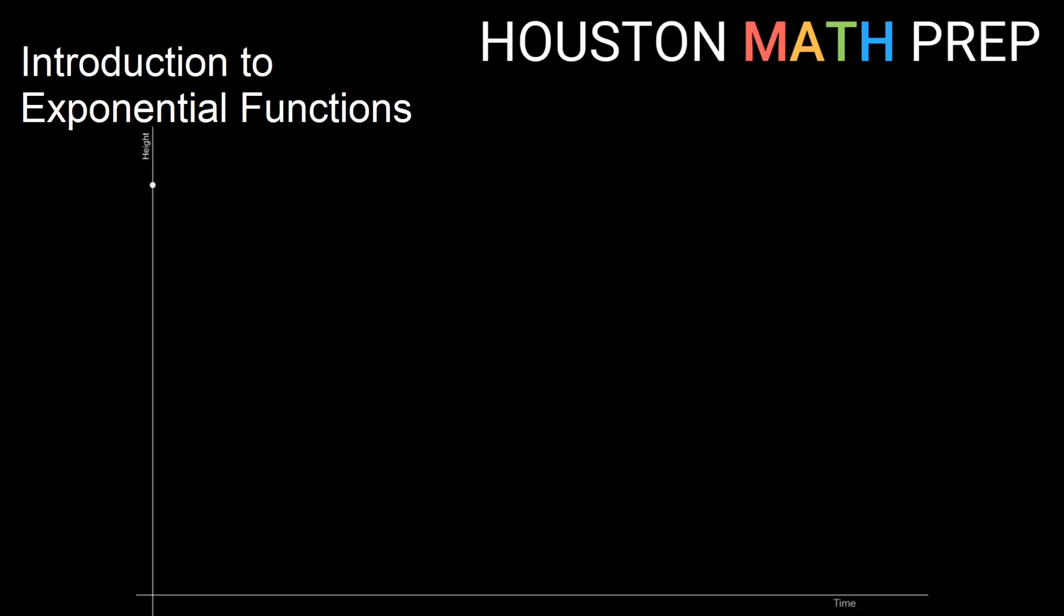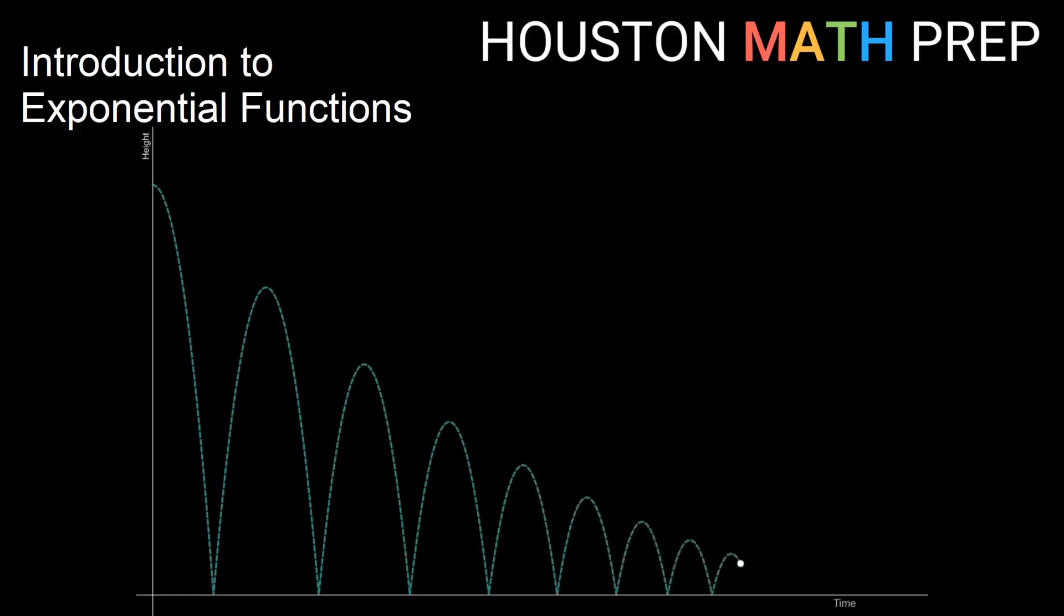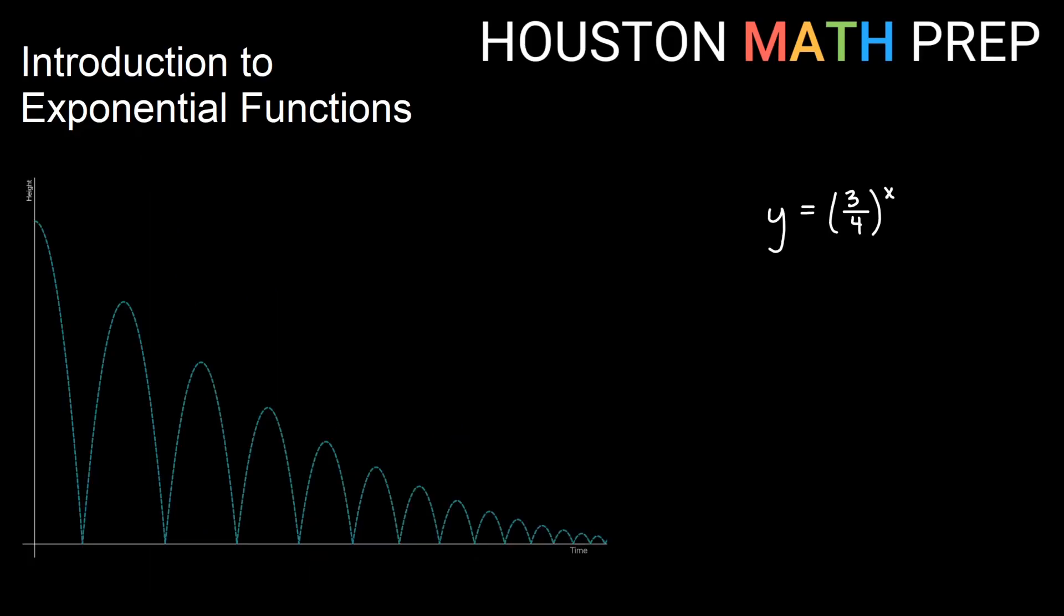Welcome back everyone. Houston Math Prep here. Let's say I'm holding a ball at some height in the air and I let go of the ball, and each bounce that it takes will bounce up to a height that is three-fourths as high as the bounce before it. So obviously each bounce is getting lower and lower, and each bounce goes up to three-fourths the height of the previous one, like 75% as high as the previous one.